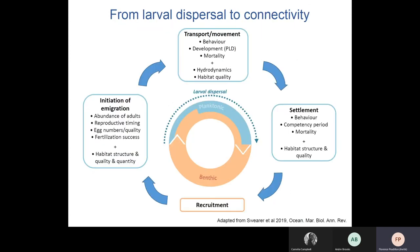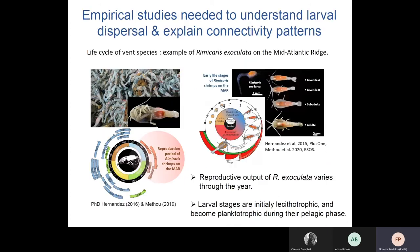Whether a larva successfully disperses from its birthplace to where it will recruit depends on processes of its early life. Here you have the typical life cycle of many benthic species, with the larval phase comprising three stages, along with important biological and environmental factors that operate and significantly affect the fate of dispersing larvae. This framework points at the key drivers of larval dispersal that act at each stage, for which it is important to gather knowledge to better understand dispersal and eventually use this information in biophysical modeling.